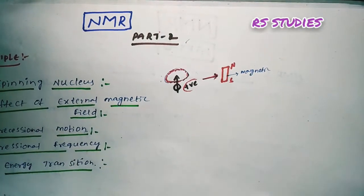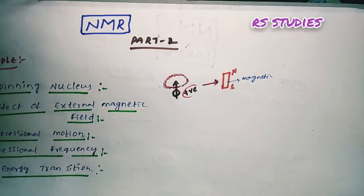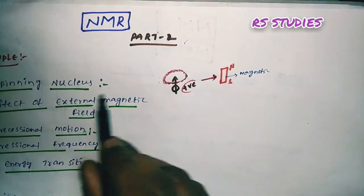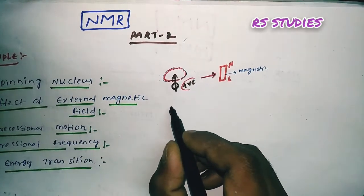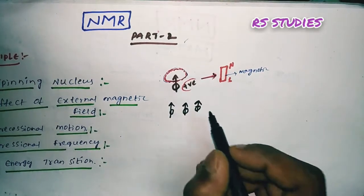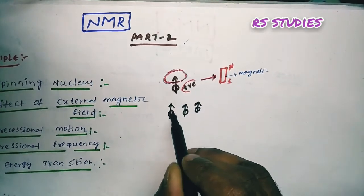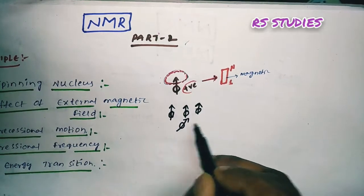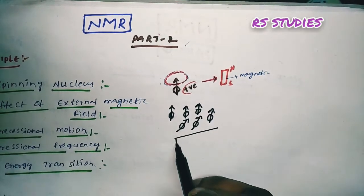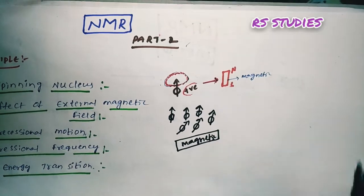This is the spinning nucleus. Now, the effect of external magnetic field — when an external magnetic field is applied, it acts on the proton. The magnetic field is applied externally to the spinning nucleus.